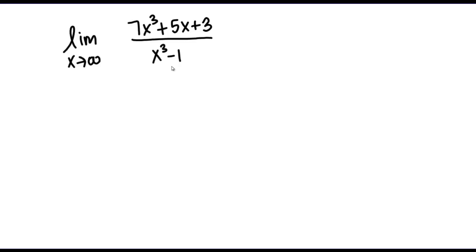So how do we actually go about evaluating this limit? The first thing we can do is think about what's happening to the top and what's happening to the bottom as x goes to infinity. As x goes to infinity, if I look at my numerator — 7x cubed plus 5x plus 3 — as x gets larger and larger, this numerator is also going to get larger and larger. So this numerator is approaching infinity as x approaches infinity.